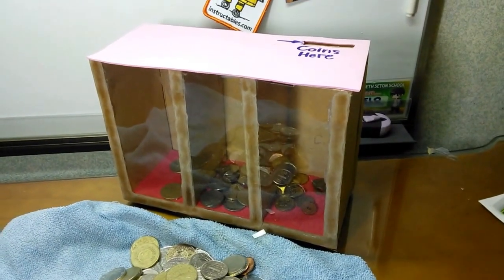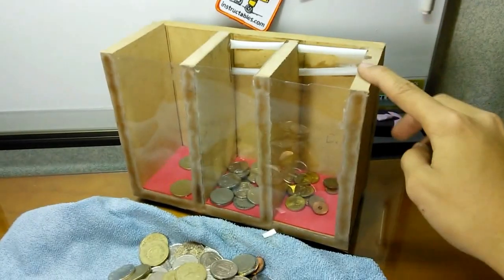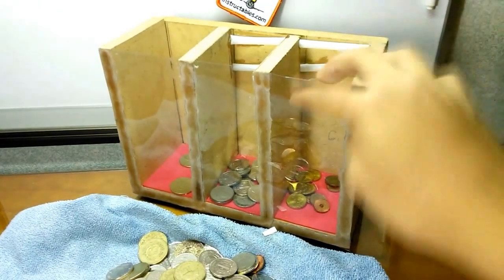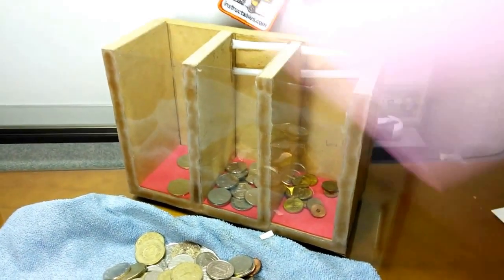Okay, here's our coin separator project. It's made out of MDF material, drinking straws, and a sheet of acetate. Okay, let's give it a try.